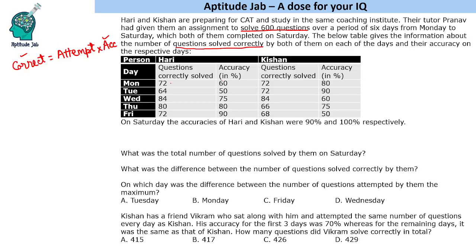On Monday, Hurry had 60% accuracy. 60% is 3/5, so multiply 72 by 5/3 — we get 120 questions attempted. 50% means half, so total questions attempted will be 128. 75% is 3/4, so multiply 84 by 4/3 — that gives 28 into 4, which is 112.